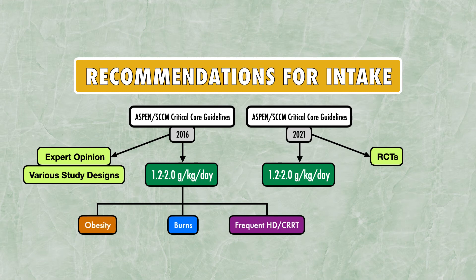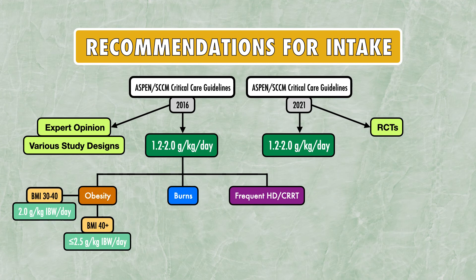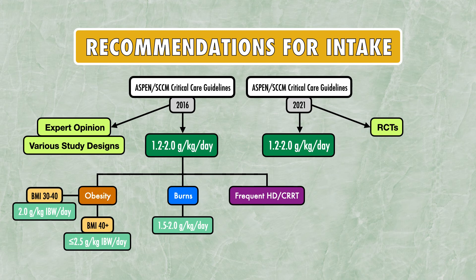The three protein recommendations from the 2016 guidelines are specific to obesity, burns, and frequent hemodialysis or continuous renal replacement therapy. For obesity, they recommend 2.0 grams per kilogram of ideal body weight per day with a BMI of 30–40, and up to 2.5 grams per kilogram of ideal body weight per day with a BMI greater than or equal to 40. For burns, they recommend 1.5 to 2.0 grams per kilogram per day. For frequent hemodialysis or continuous renal replacement therapy, they recommend up to 2.5 grams per kilogram per day.